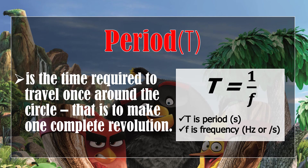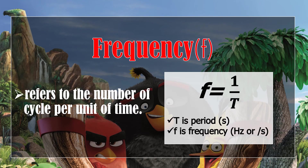The formula for finding the period is P equals 1 over frequency. Period is measured in seconds while frequency is measured in hertz or per second. Frequency refers to the number of cycles per unit of time, with the formula f equals 1 over T, where T is the period in seconds and f is the frequency in hertz.